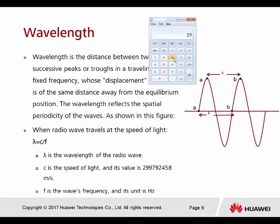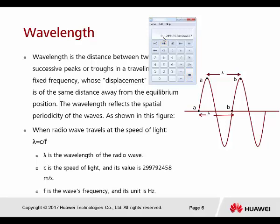We take 299,792,458 divided by the frequency. Since we want to use 2.4 GHz, when doing the calculation we use hertz, so we have to add the full nine-digit value for 2.4 GHz. This gives us the answer: the wavelength for 2.4 GHz becomes 0.125 meters. That's how we do the calculation.